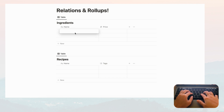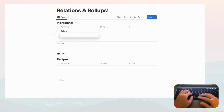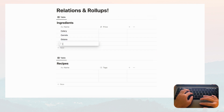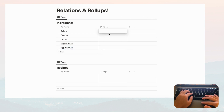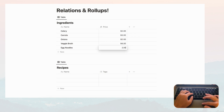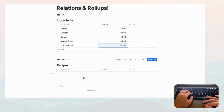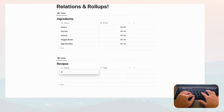Here we have the ingredients, so let's add a bunch. We're trying to make a veggie soup, so we need celery, carrots, onions, veggie broth, and let's throw in some egg noodles. Then we're going to fill in the prices. Now we have the prices in this column.